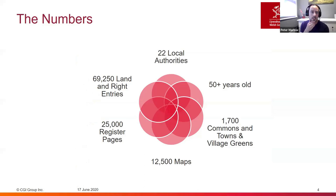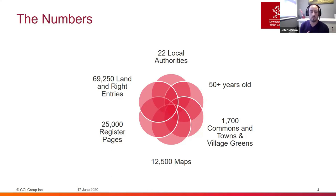A quick look at some of the numbers: there are 22 local authorities in Wales, each with their own register, most of which are more than 50 years old. In terms of quantity, we're looking at about 12,000 map pages, 25,000 register pages, and around 70,000 land and rights entry pages. It isn't really a big data project in terms of record count, but the challenge is more in the quality of the data we're trying to transform.